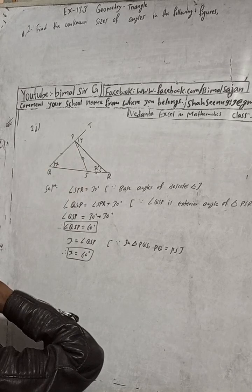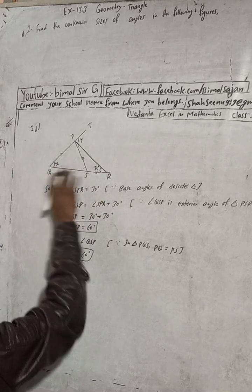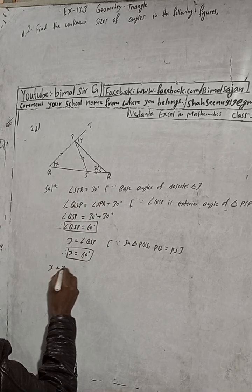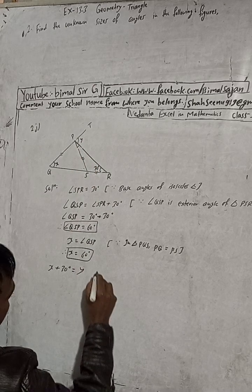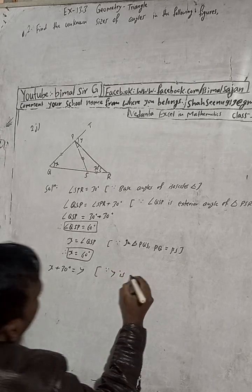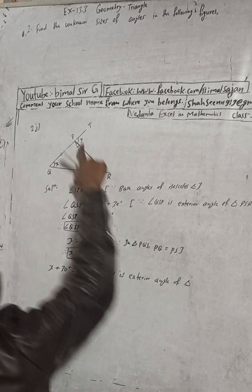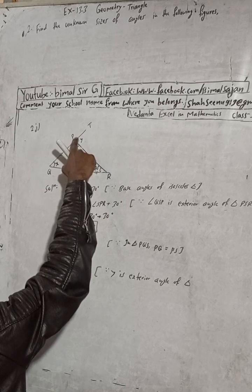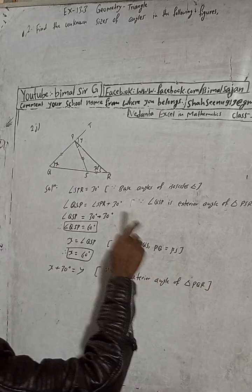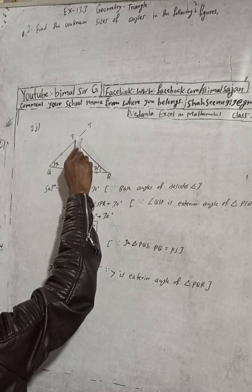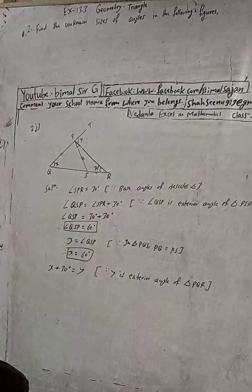Now let's find the value of Y. In this bigger triangle, we can write: X plus 30 degrees is equal to Y. Why? Because Y is the exterior angle of triangle PQR. When this angle Y is an exterior angle, we apply the theorem that the exterior angle equals the sum of the two opposite interior angles, which are X and 30 degrees.